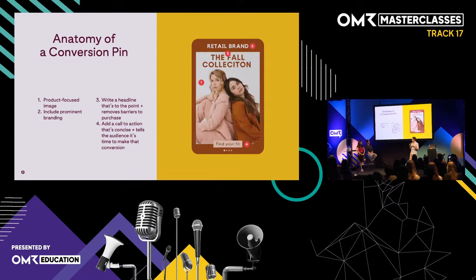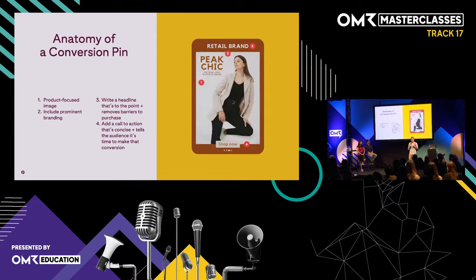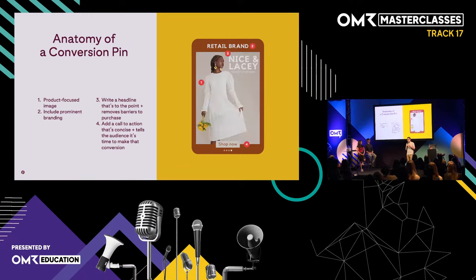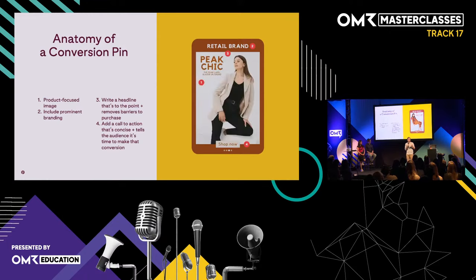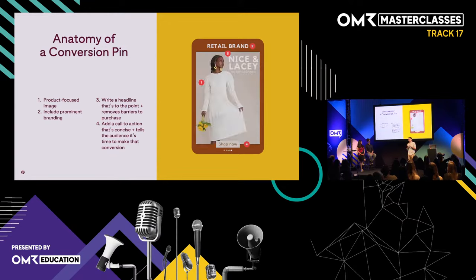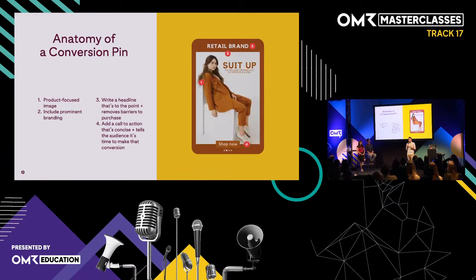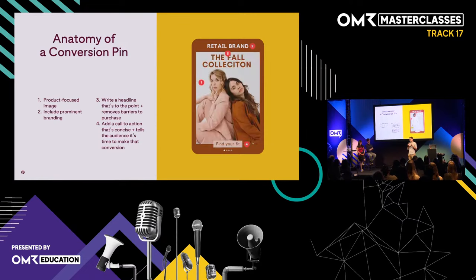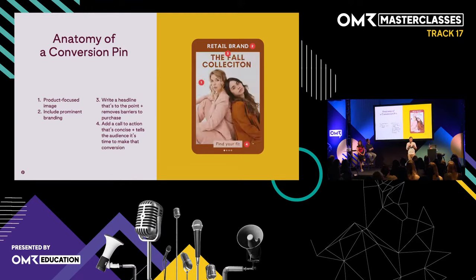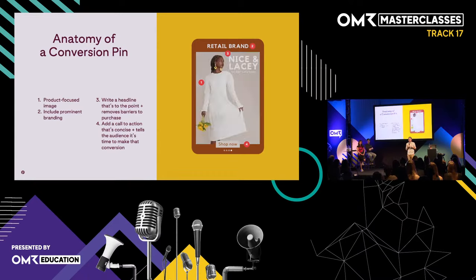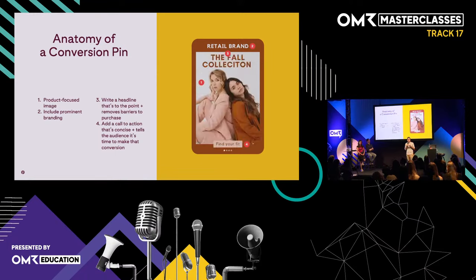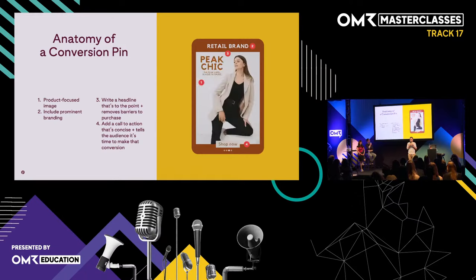When you want to optimize for success, you need to create assets for each stage of the funnel. There are four main points to take away: first, be specific about the product — it should stay in the center with focus on it. Second, make sure your branding is always included — pinners want to know who is selling the product. Third, use a clear title to tell pinners what the product is about. And last but not least, use a clear call to action showing what is expected of the pinner — shop now, visit the shop, or sign up.